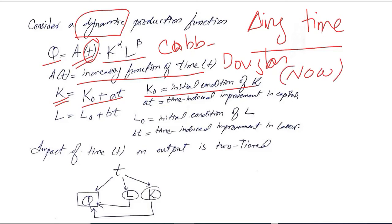And a into t is the time-induced improvement in capital. As you know, over time capital gets better and better due to research and development. So this is also added in the overall capital initial condition that this was the initial level of capital and these are the improvements.